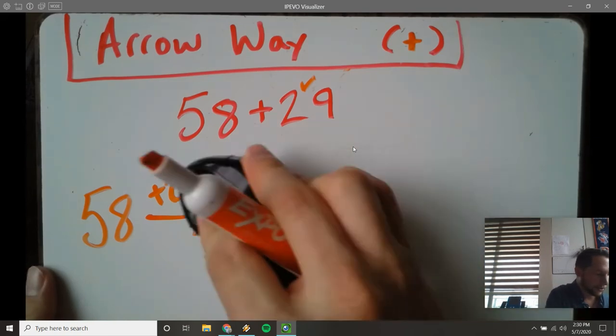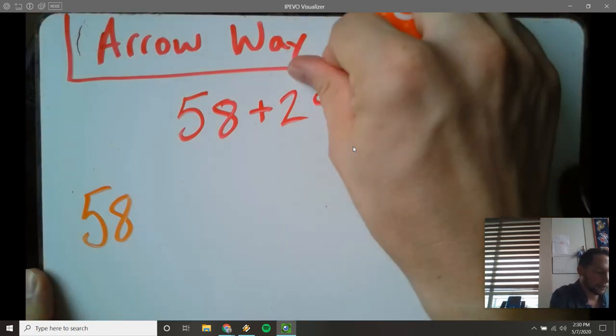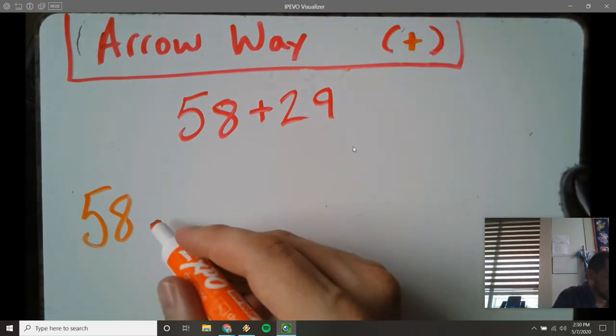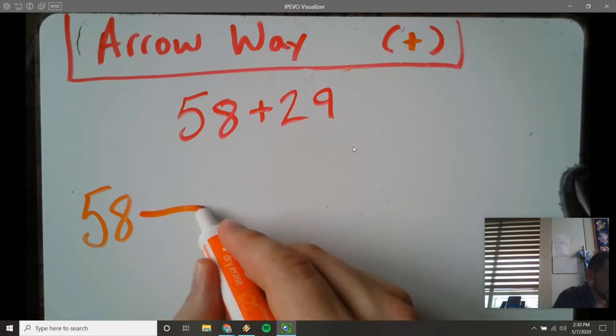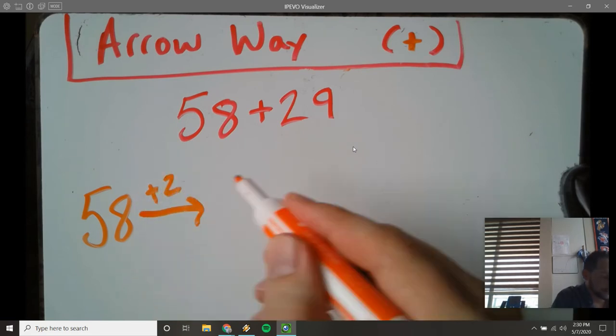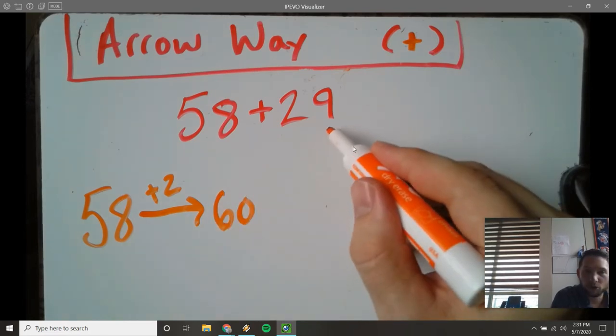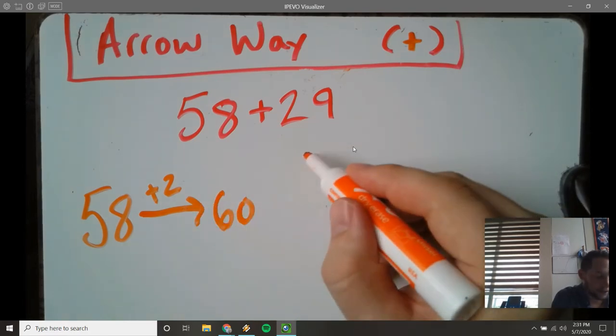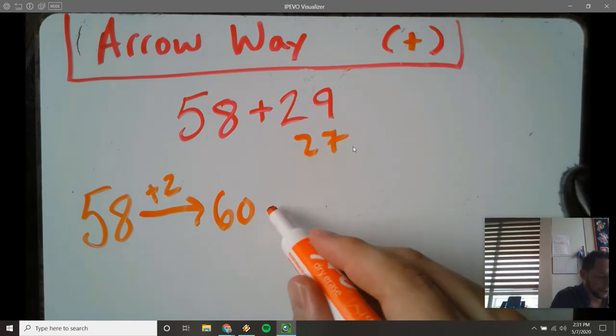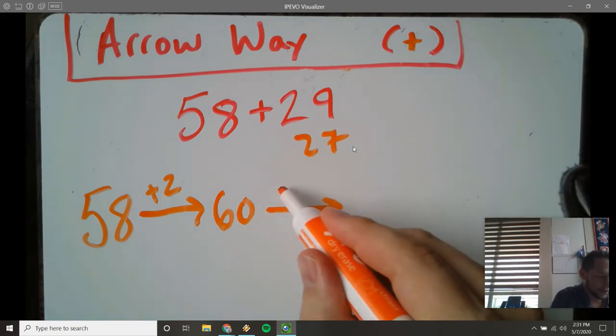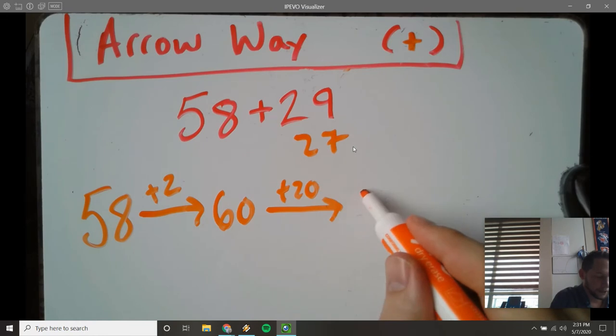Another way you can do this, again start with the biggest number. I could add the ones first, just the same way I did. Try and get to that nearest 10. 58 plus 2 is 60, so I took 2 away from here because I added it. So I've got 27 left. Okay, now I can add 20 equals 80, and now I can add plus 7, 87.